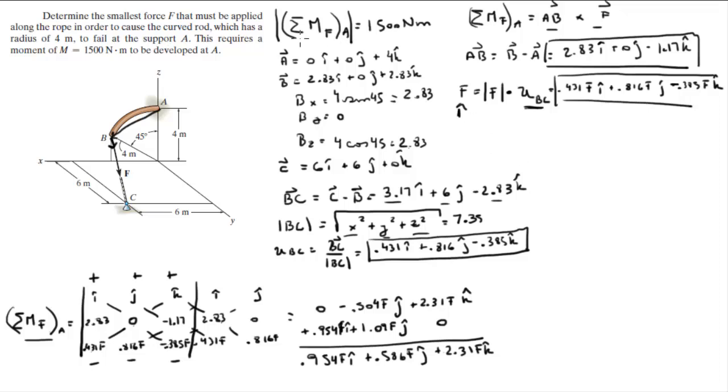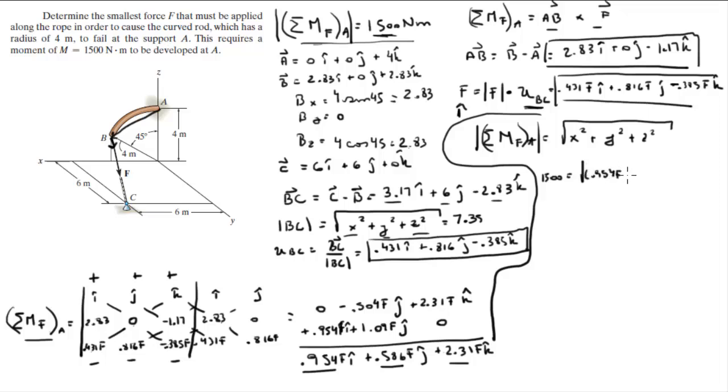Now how do we solve this problem? You know that the magnitude is given which is 1500 newton meters, that's the magnitude required to break this rod. And you know that the magnitude of this or any vector for that matter is given by the x component square plus the y component square plus the z component square all square rooted. This is the x component, this is the y component, this is the z component. So you know that this which is 1500 is equal to the square root of 0.954F square plus 0.586F square plus 2.31F square.